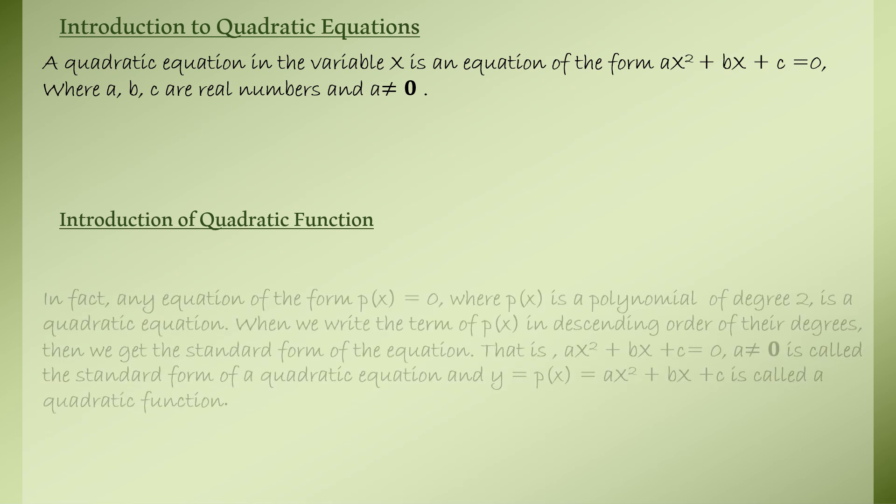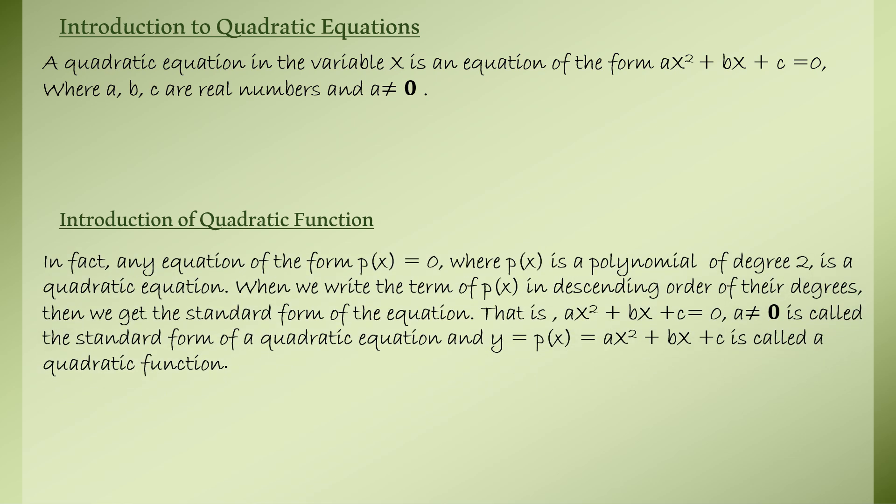Now we will see how a quadratic function looks like. For any equation of the form p(x), when we write the terms in descending order of degrees, we get the standard form ax² + bx + c = 0, where a is not equal to 0. This is called the standard form of a quadratic equation. Here, y = p(x) = ax² + bx + c is called a quadratic function.